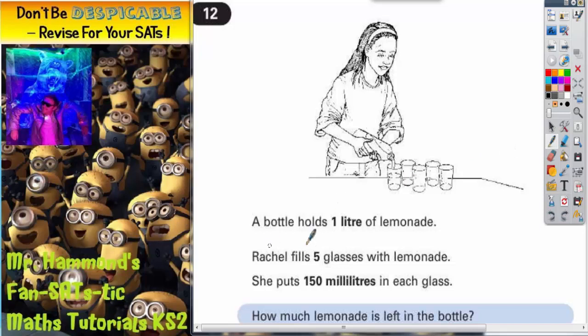Question 12. A bottle holds one liter of lemonade and there's the bottle. Rachel fills five glasses with lemonade. She puts 150 milliliters in each glass. How much lemonade is left in the bottle?